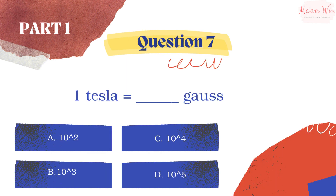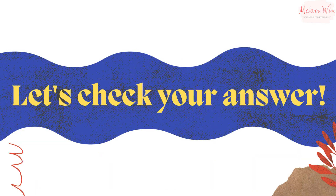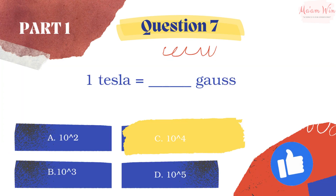Question number seven: one tesla is equal to blank gauss. Let's check your answer — the right answer is letter C: 10 to the power of four.